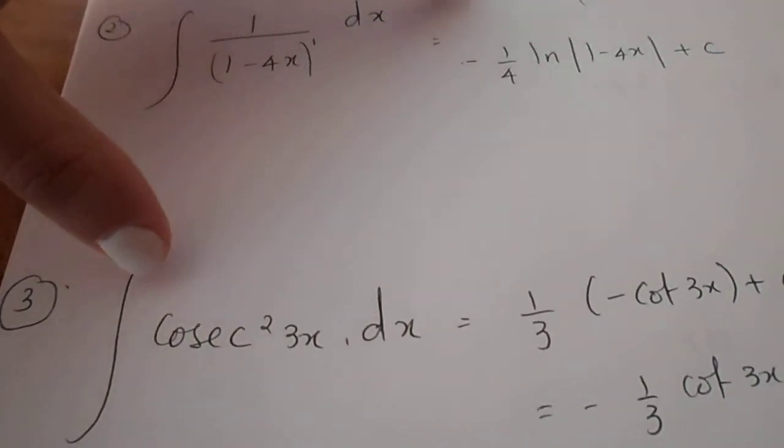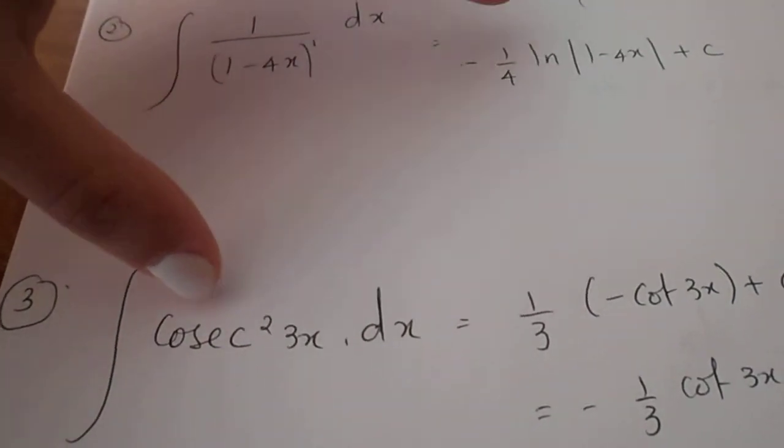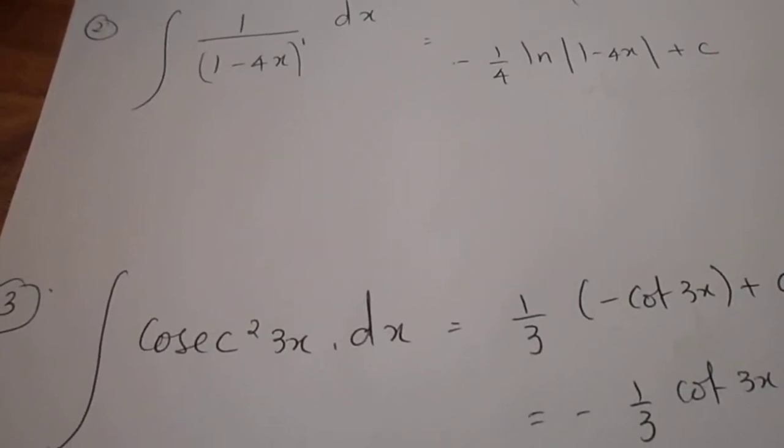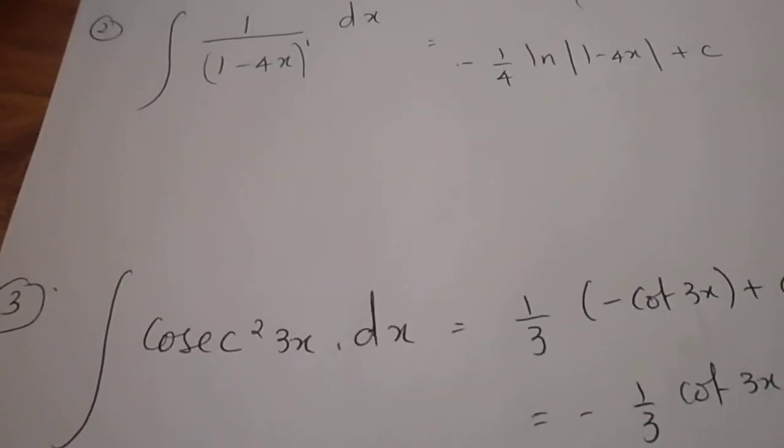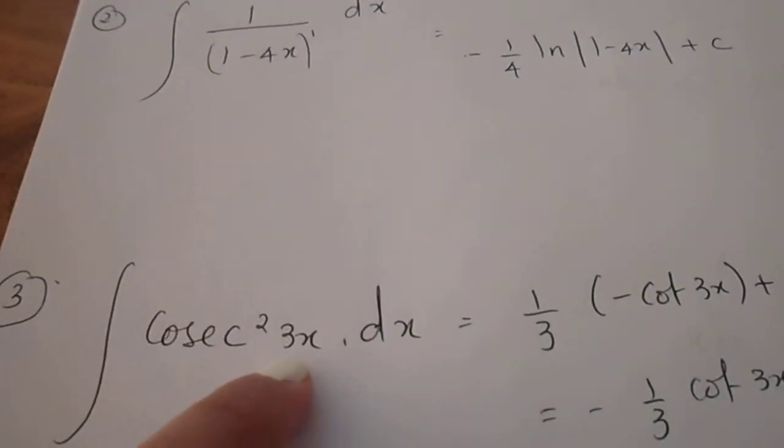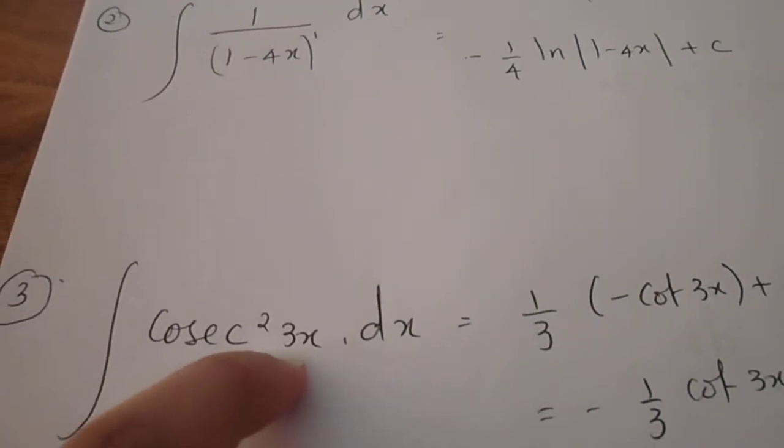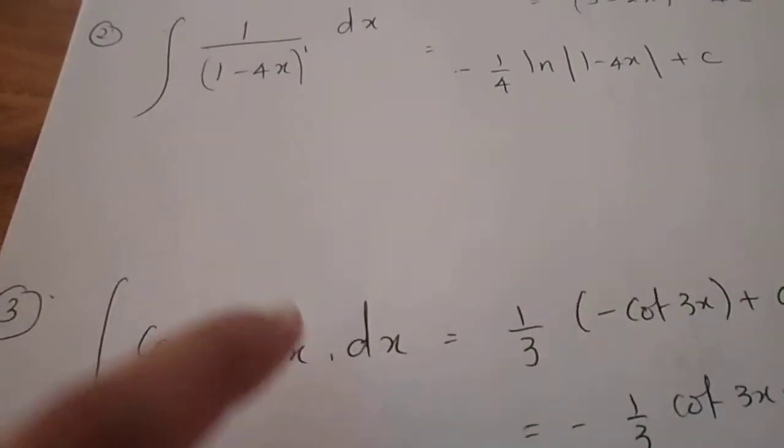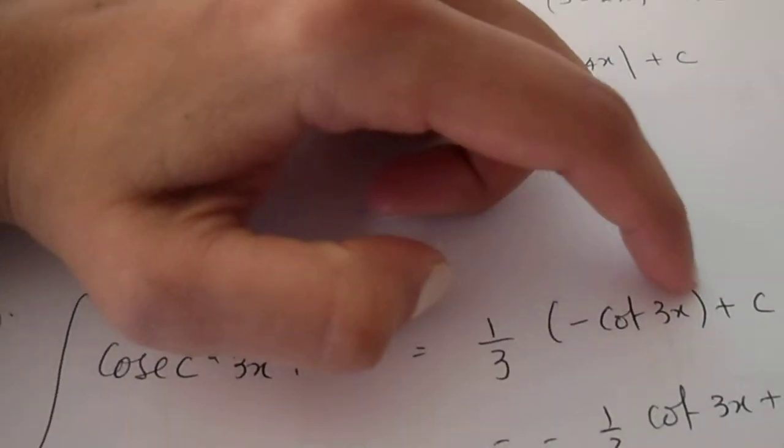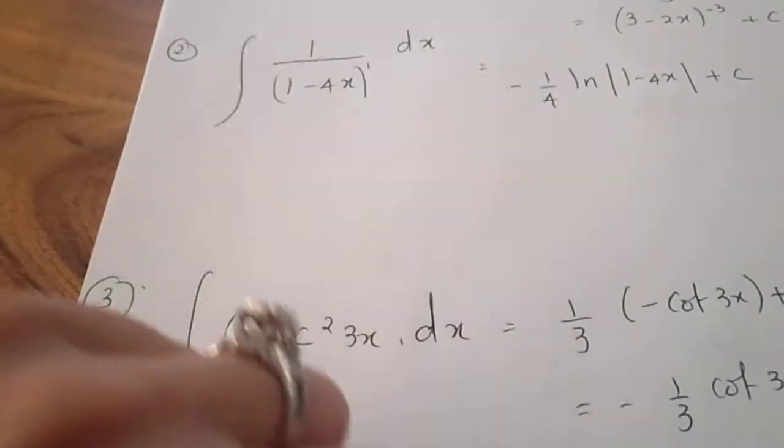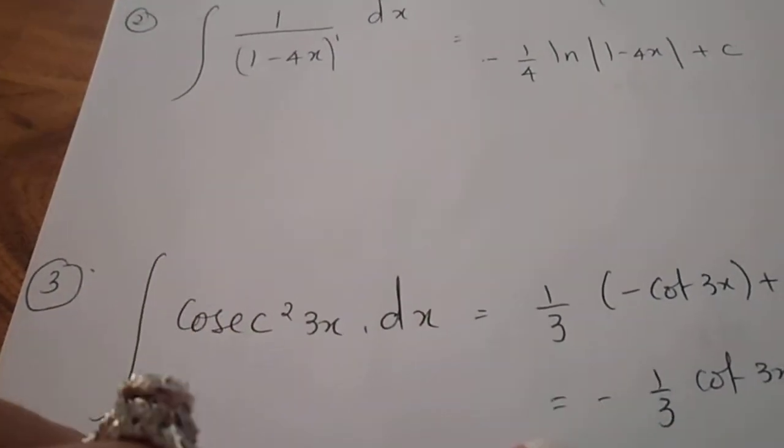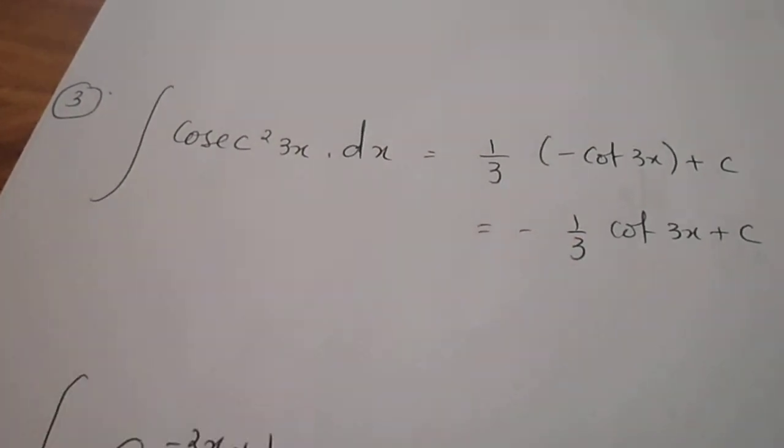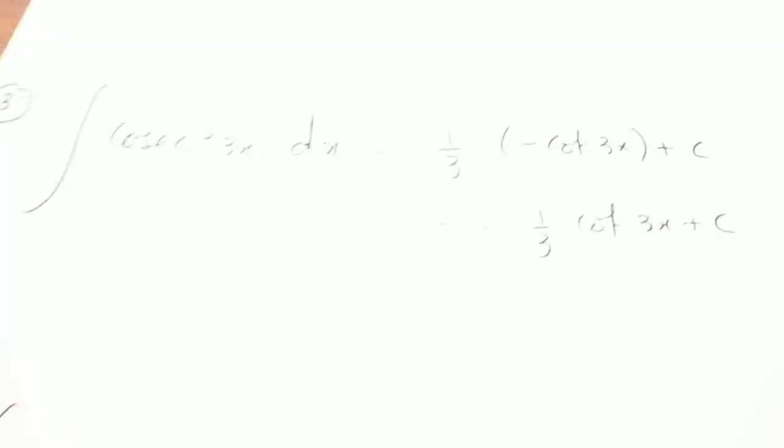Then I proceed to integrating the overall function. The integral of cos x squared x is minus cot x. But in this case, don't forget that the angle will never change. So the integral of cos x squared 3x is minus cot 3x plus c. Just neaten your answer up. That equals minus 1 third cot 3x plus c as your final answer.